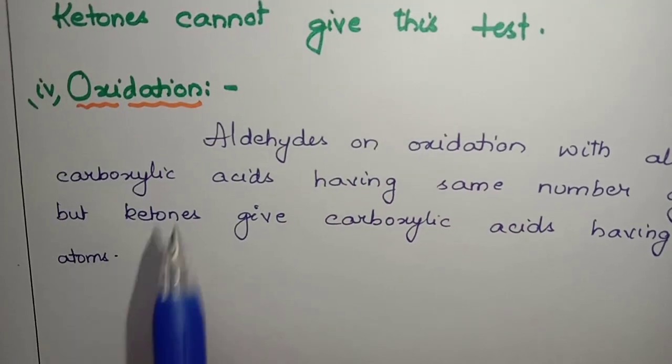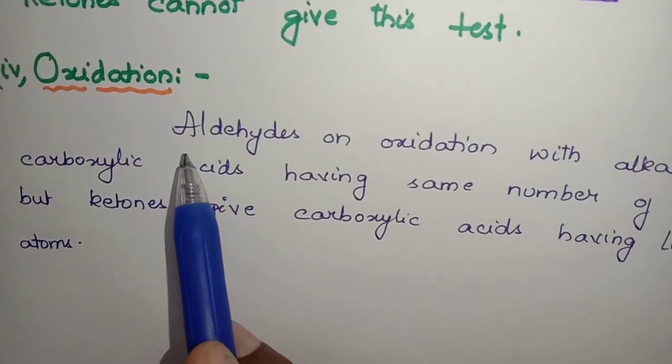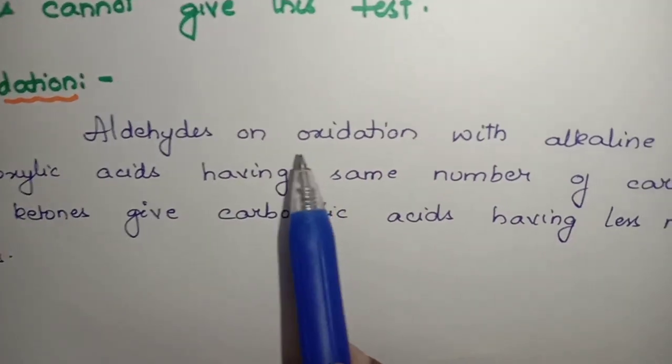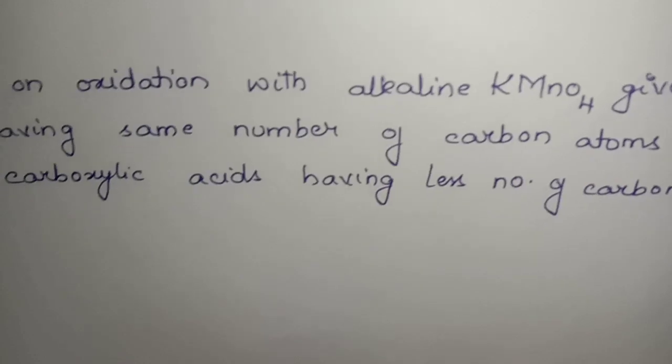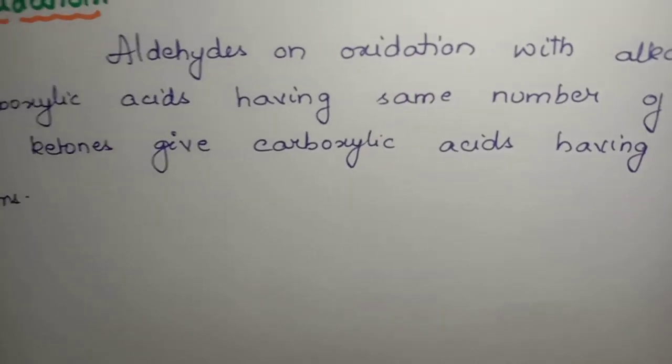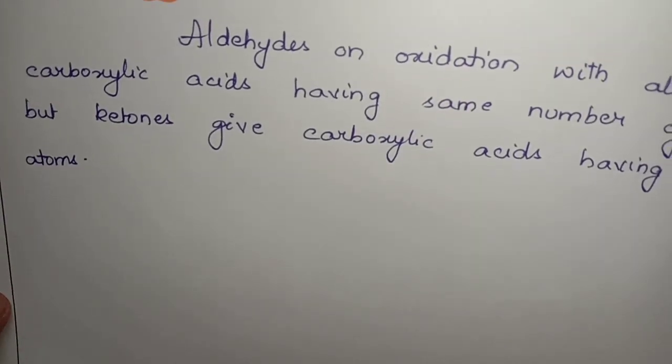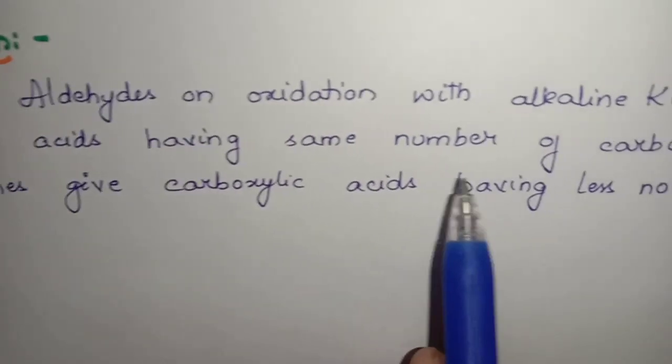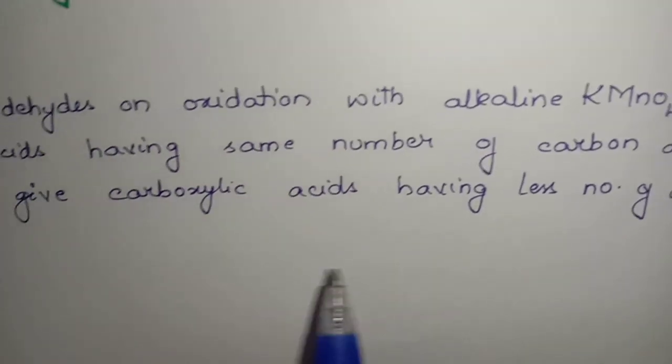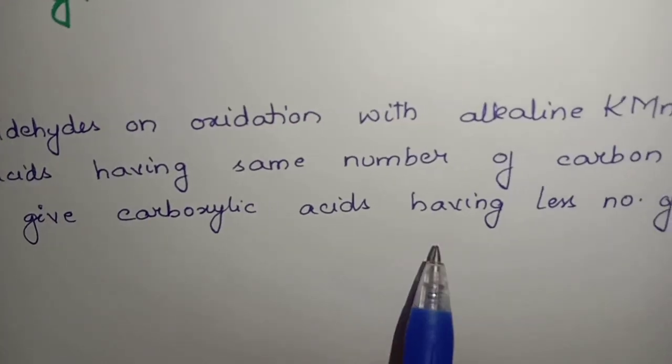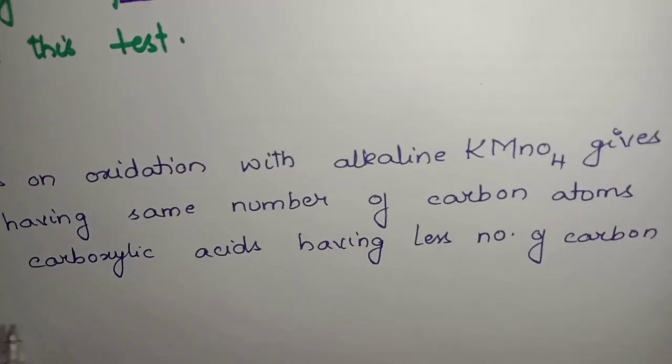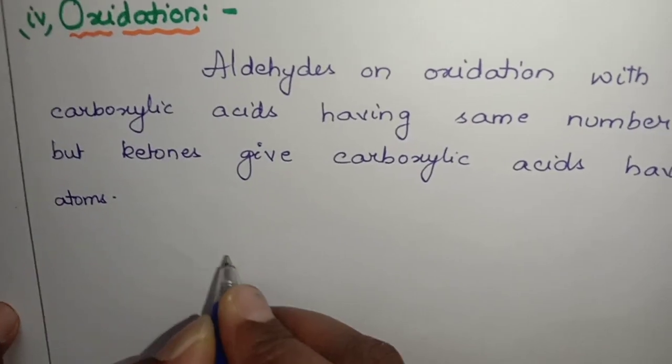Next, the fourth one is oxidation. Aldehydes on oxidation with alkaline KMnO4 give carboxylic acids. This we have already learned in the properties, having same number of carbon atoms, whereas ketones give carboxylic acids having less number of carbon atoms.